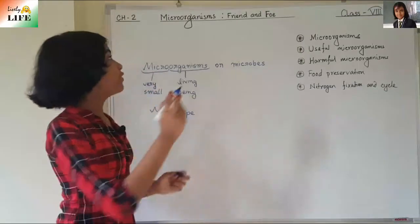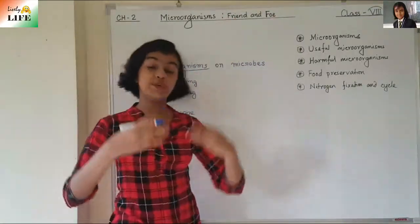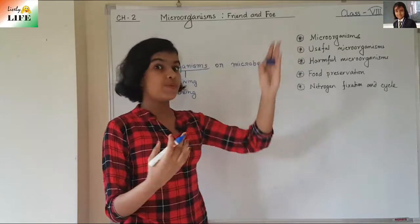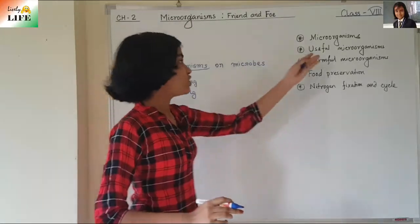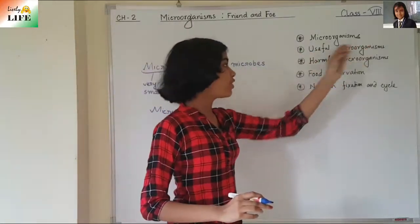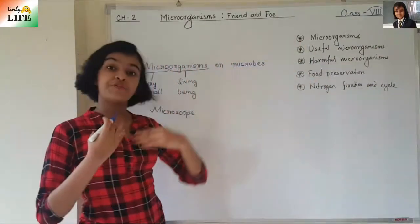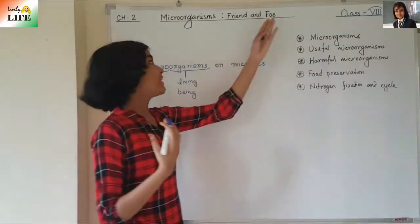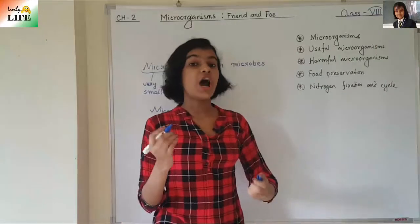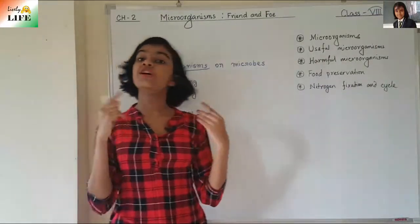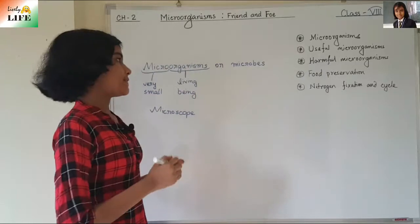Friend and foe — 'friend' means those microorganisms that are useful to us, and 'foe' means enemy, those that can harm us. So microorganisms can be both our friends and our enemies, and we are going to learn how they are useful and how they are harmful to us.